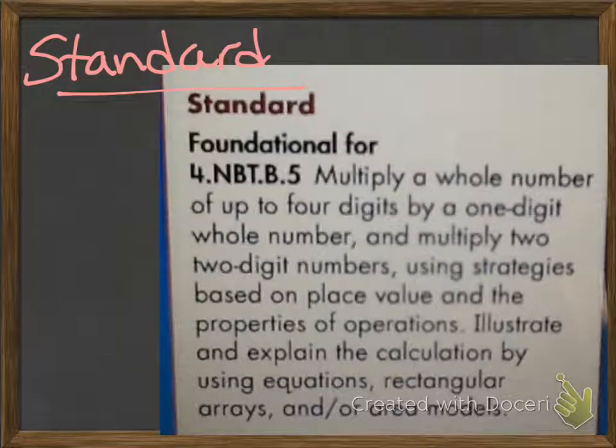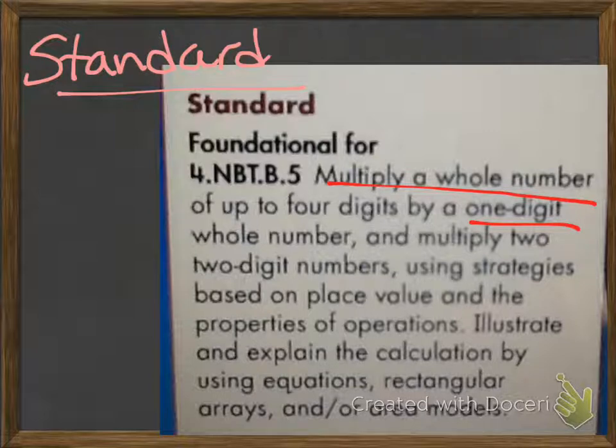Our standard is multiply a whole number of up to four digits by one digit, a whole number, and multiply two digits by two digits using strategies based on place value and the properties of operation.